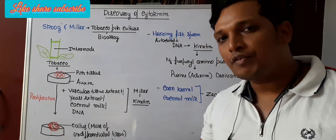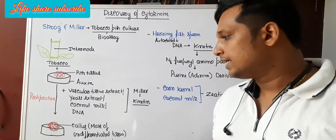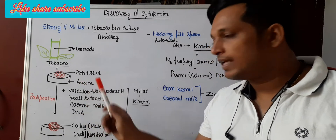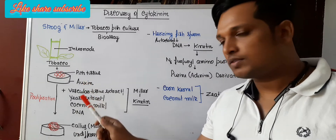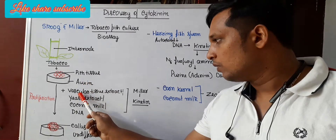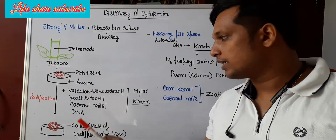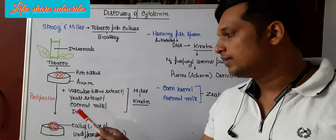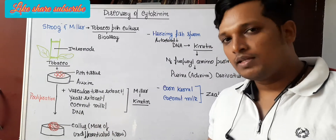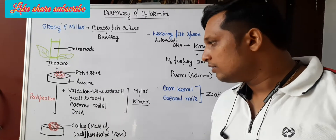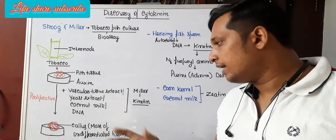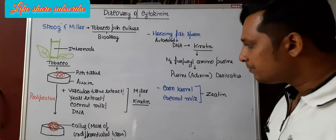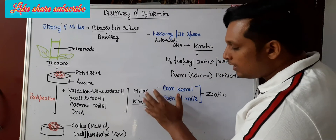The cells started forming a mass of undifferentiated tissue called callus. The extract they mixed along with auxin included vascular tissue extract, yeast extract, coconut milk, and DNA. Any one of these was sufficient to cause this effect.